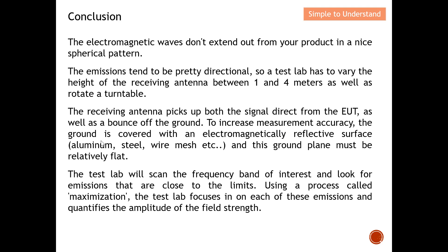To increase measurement accuracy, the ground is covered with an electromagnetic reflective surface — for example, aluminum, steel, or wire mesh — and this ground must be relatively flat. The test lab scans the frequency band of interest and looks for emissions that are close to the limit using a process called maximization (peak search). The test then focuses on each of these emissions and quantifies the amplitude of the field strength.